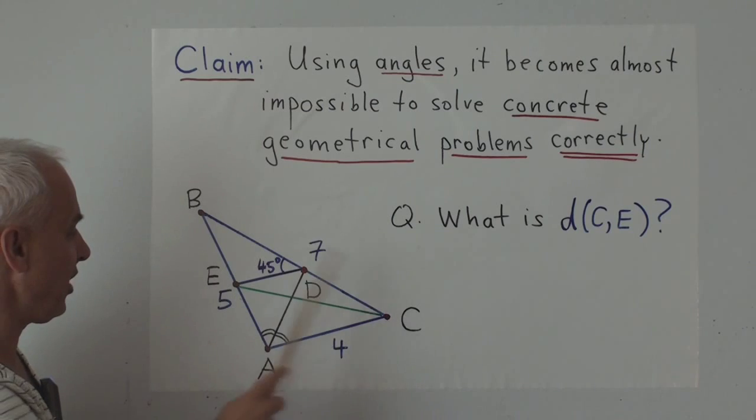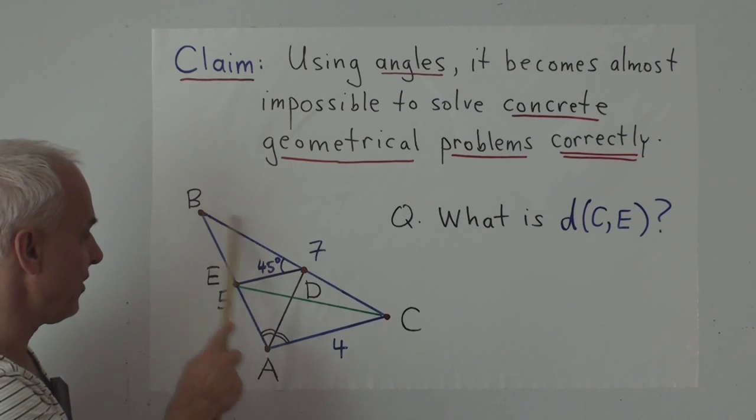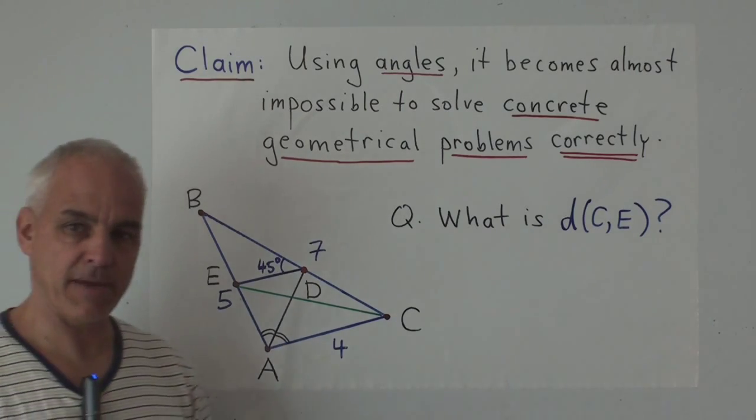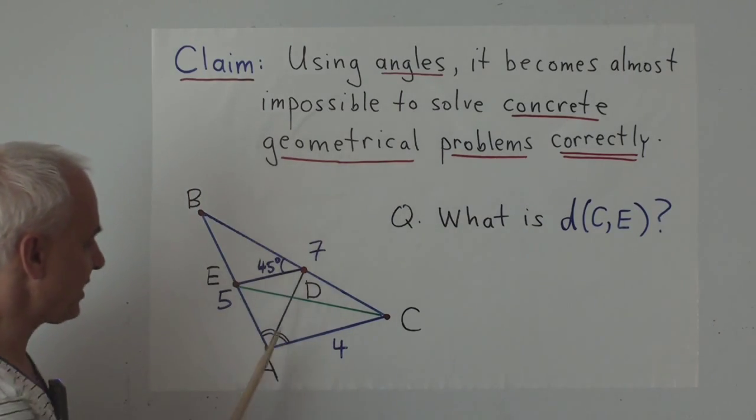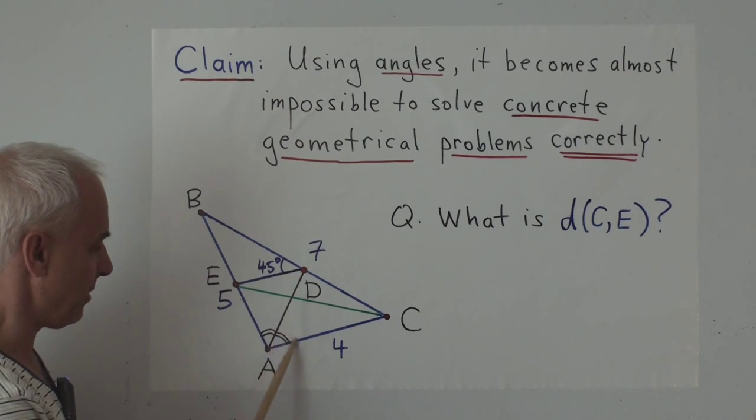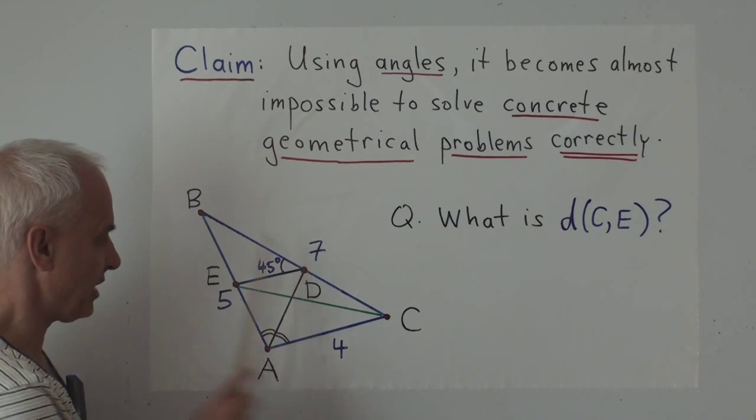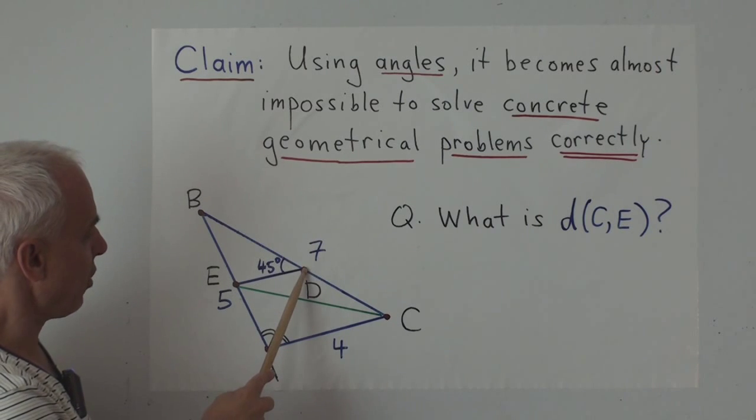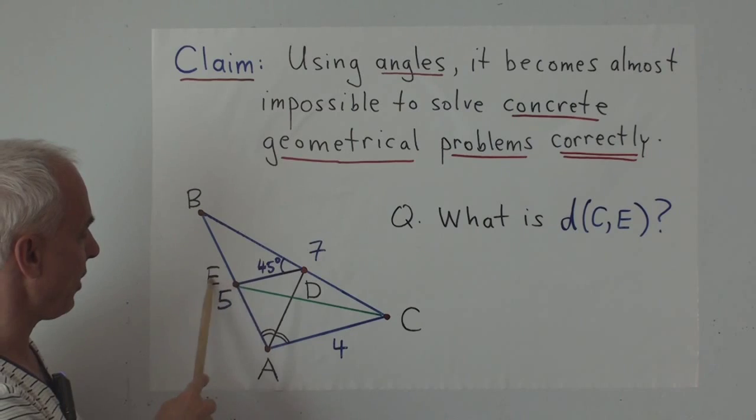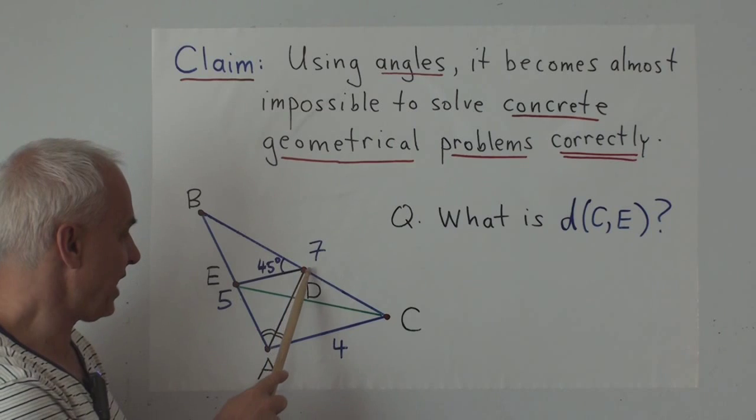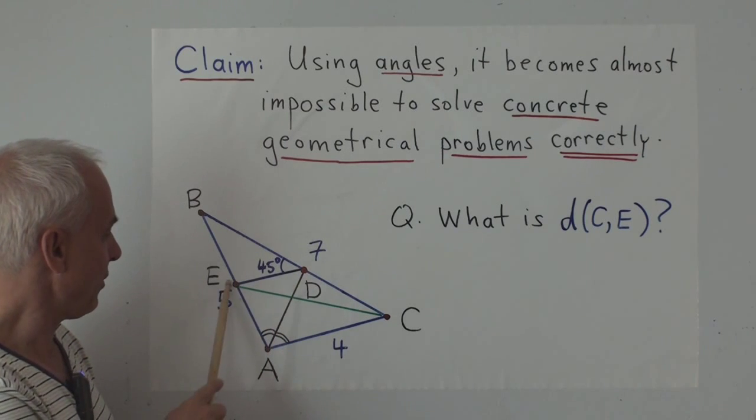To give just an initial indication of why this might be true, here's a kind of random problem which I've just made up. Here's a triangle A, B, C with sides 5, 7, and 4. So these are lengths. And now I'm going to make a geometrical problem. I'll just sort of make it up at random. So let's take the angle bisector at this vertex A, so that this angle is the same as that angle. Okay, so there's an angle bisector, and let's suppose that it meets this new side at a new point D. And now let's sort of go at an angle of 45 degrees from D, till we meet this point E over here.